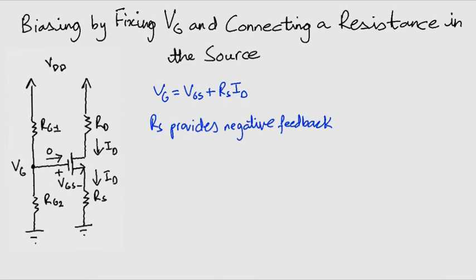Let me show you how. Now imagine that ID increases for any reason. This will obviously upset the operating point. So how will this resistor restore the value of ID?